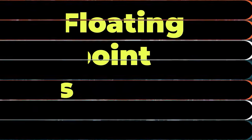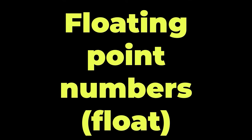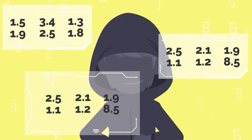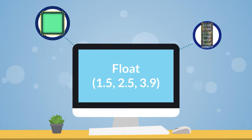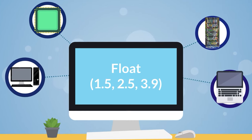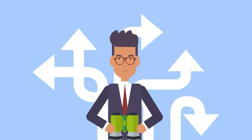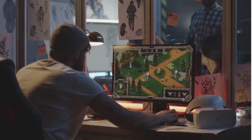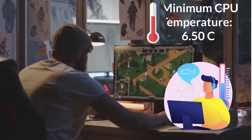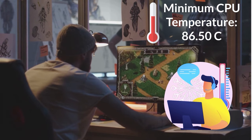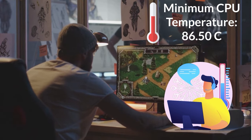Floating point numbers — floats. These are the artisans of the data type world. Think of a float as the caviar of the computing universe. It's used for those ultra-specific tasks that demand precision, like when you're tweaking the temperature of your gaming rig by tiny fractions.